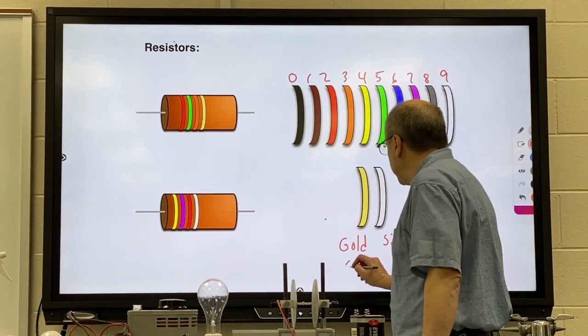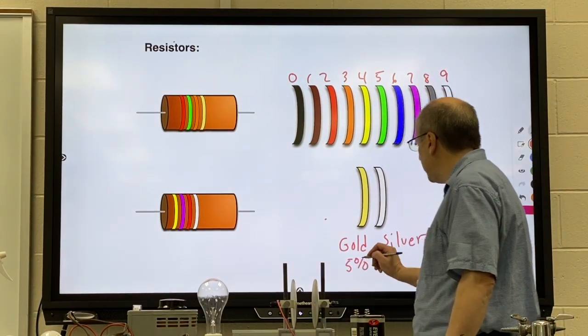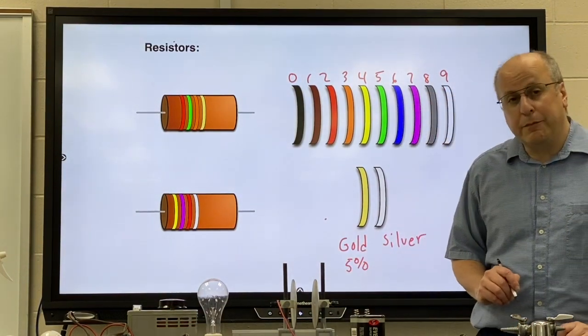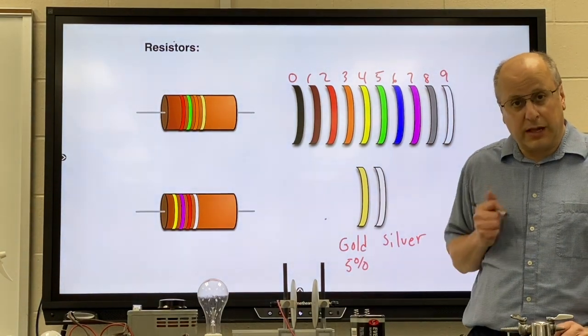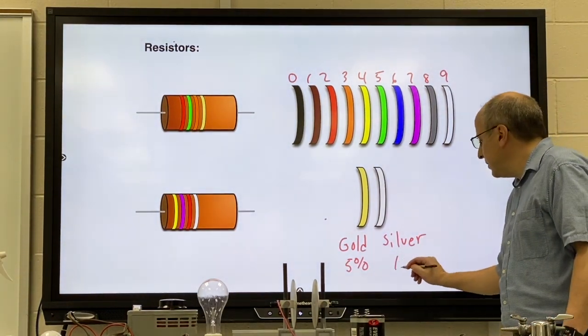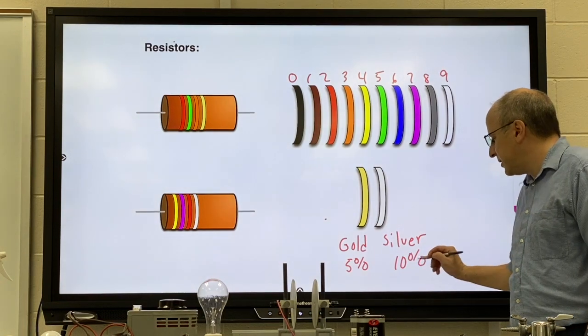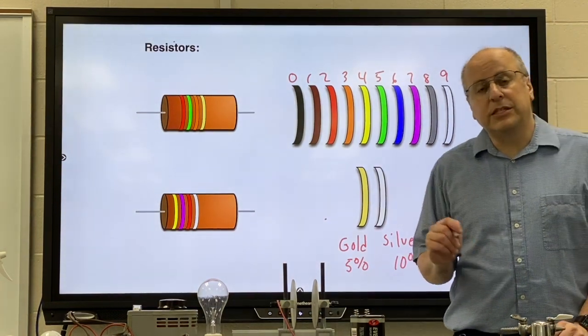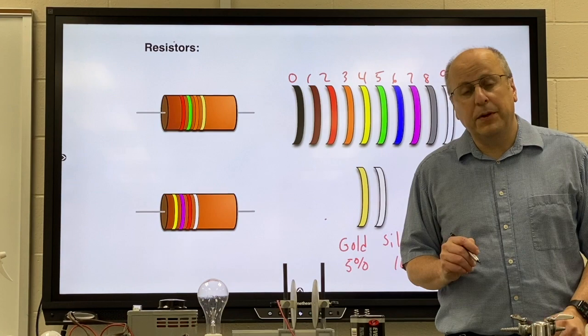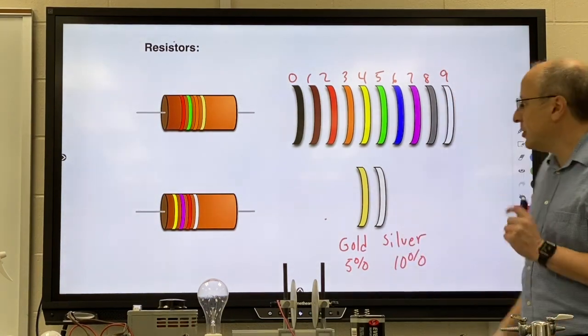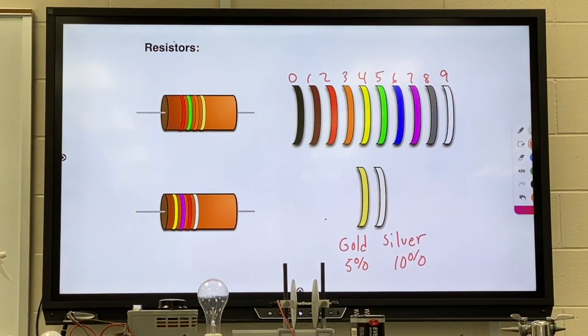Gold represents a resistor that is correct to within 5% error of what is written with those colors. Silver is a little less precise. A resistor with silver as its fourth stripe could be off by up to 10%. So let's put it in practice and see how it works.